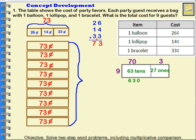Then nine times three ones is going to be 27 ones, which is just 27. Now I'm going to add those things together: 0 plus 7 is 7, 3 plus 2 is 5, 6 plus 0 is 6, so I have 657 cents. What is the total cost for nine guests? 657 cents, or six dollars and 57 cents.